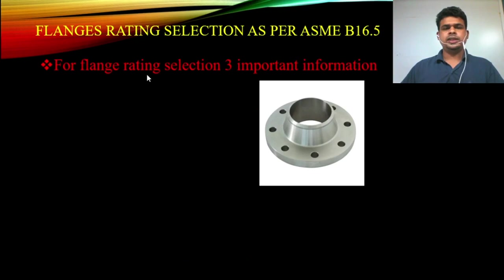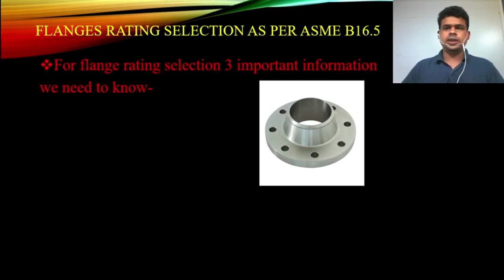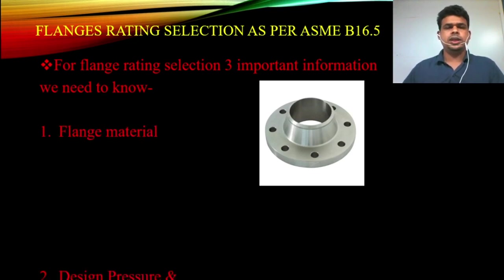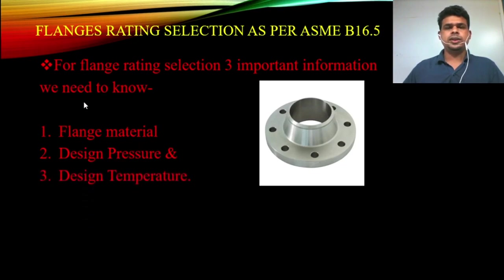For flange rating selection, three important pieces of information are needed when selecting the flange rating. Number one is the flange material. Number two is the design pressure. Number three is the design temperature. These three things we need to know before selecting or checking a flange.